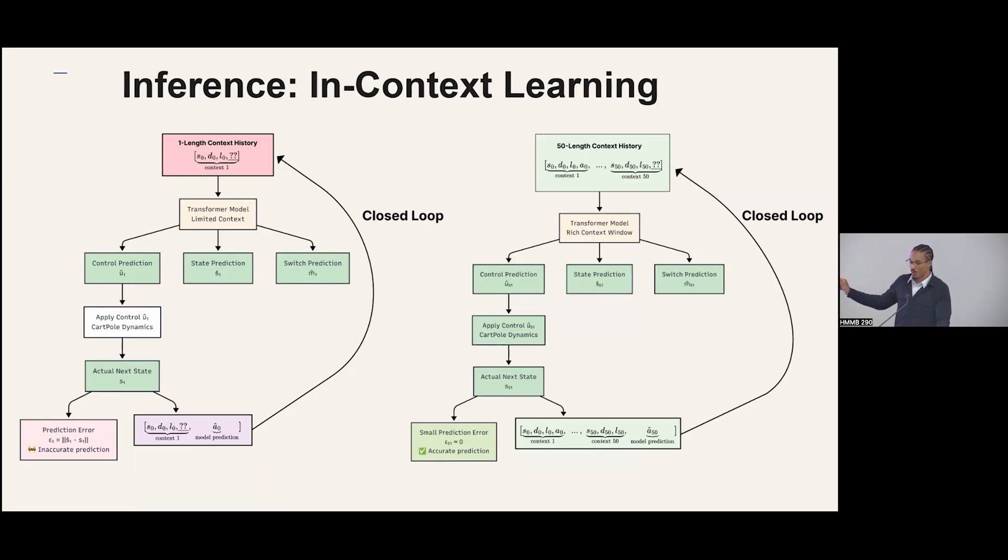And then that's provided back to the model. The model makes the next prediction, and then it just keeps going until it's stabilized.